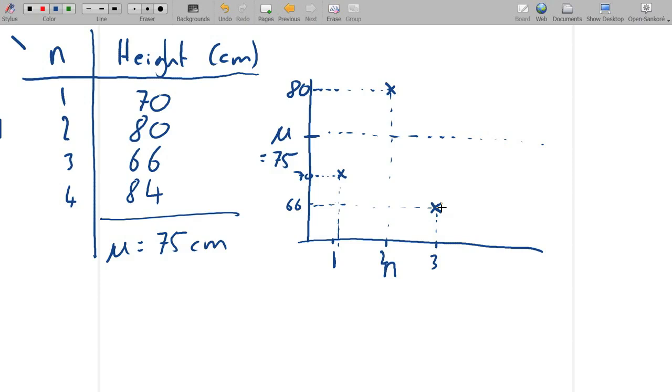And finally measurement number four, 84. That point there represents measurement number four. And this line represents the mean, that's 75.